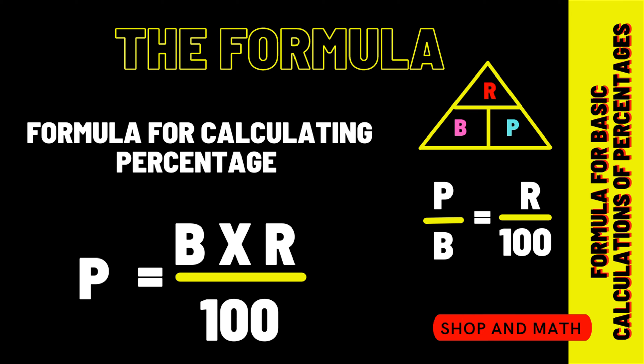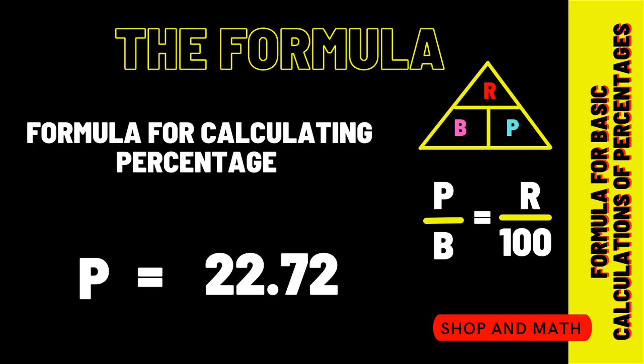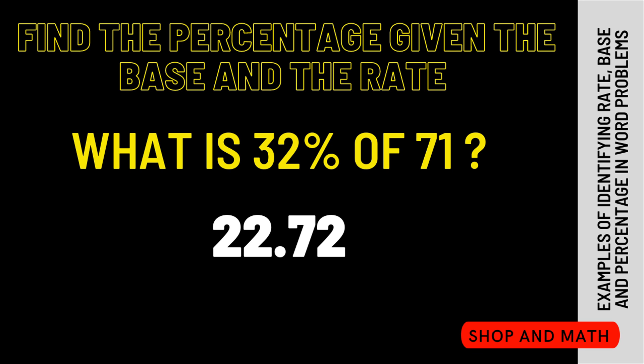Well, now we can switch out our base to 71. Then we're going to have to switch out our rate to 32. So 71 times 32 is going to be 2271 divided by 100, which gives us 22.72. Therefore, what is 32% of 71? It is 22.72.